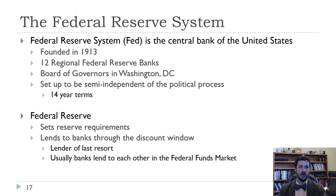The Federal Reserve also acts as the lender of last resort through something called the discount window. It also targets something called the federal funds rate, which is the interest rate at which banks lend each other federal funds — which are just reserves.